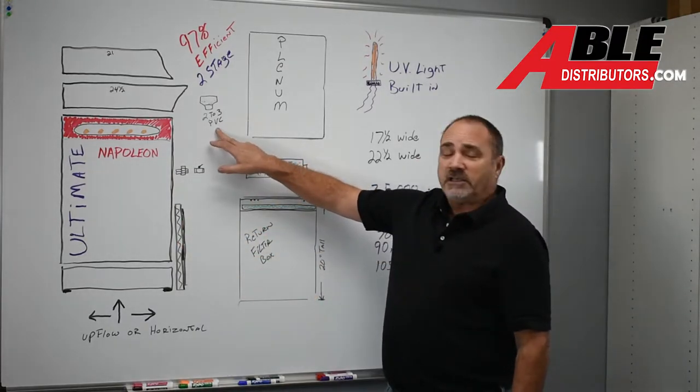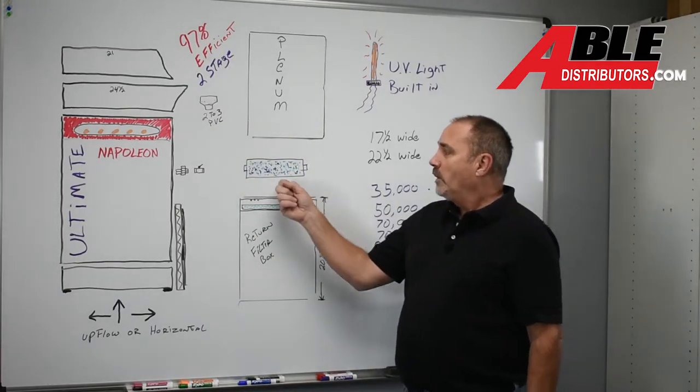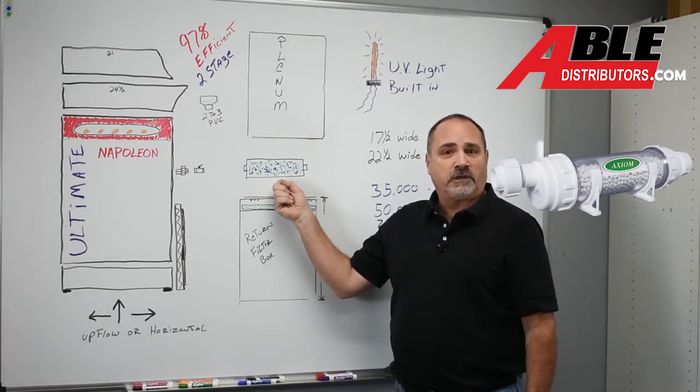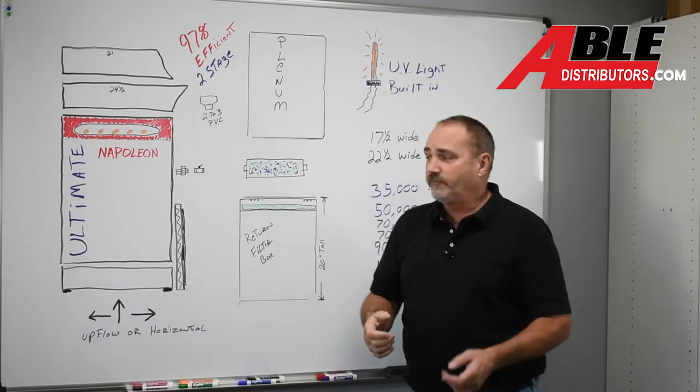We're also going to suggest that you get some PVC, like a two to three reducer for the venting. We're also going to suggest that you get a condensate neutralizer kit. The water these things produce is very acidic.